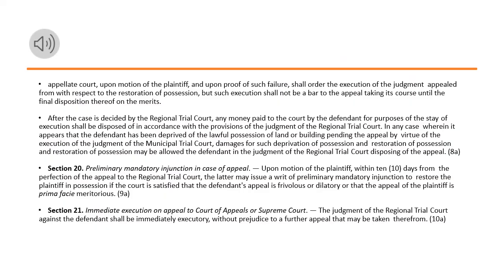Should the defendant fail to make the payments above prescribed from time to time during the pendency of the appeal, the appellate court, upon motion of the plaintiff, and upon proof of such failure, shall order the execution of the judgment appealed from with respect to the restoration of possession, but such execution shall not be a bar to the appeal taking its course until the final disposition thereof on the merits. After the case is decided by the Regional Trial Court, any money paid to the court by the defendant for purposes of the stay of execution shall be disposed of in accordance with the provisions of the judgment of the Regional Trial Court. In any case wherein it appears that the defendant has been deprived of the lawful possession of land or building pending the appeal by virtue of the execution of the judgment of the Municipal Trial Court, damages for such deprivation of possession and restoration of possession may be allowed the defendant in the judgment of the Regional Trial Court disposing of the appeal.